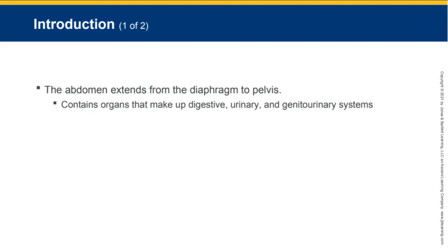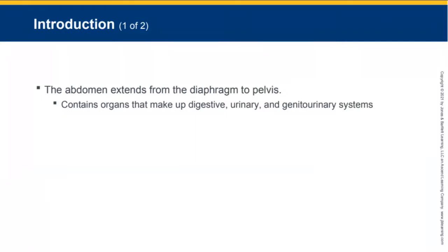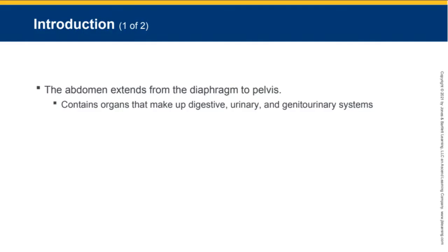The abdomen contains organs that make up the digestive, urinary, and genitourinary systems. When we say genitourinary, it's a combination of the reproductive system and the urinary system combined, because they work together and share most of their organs. The abdomen contains a lot of organs as it relates to the digestive system.